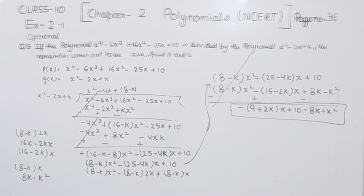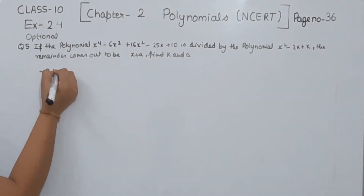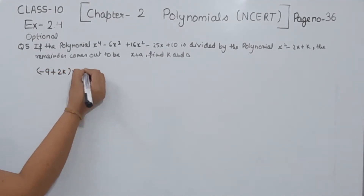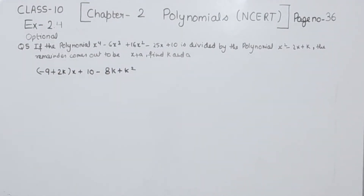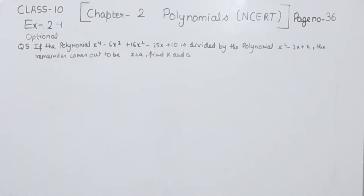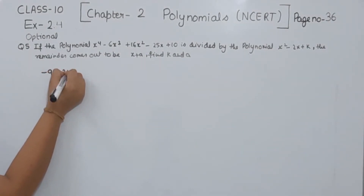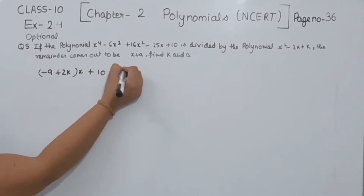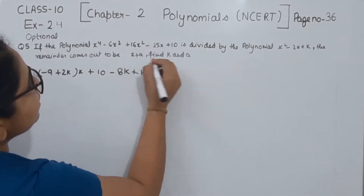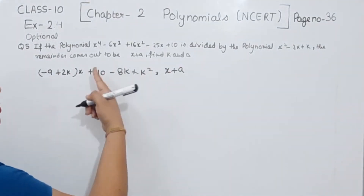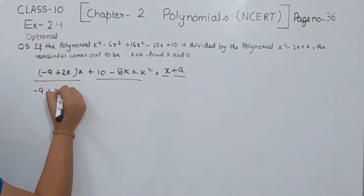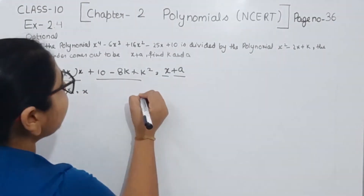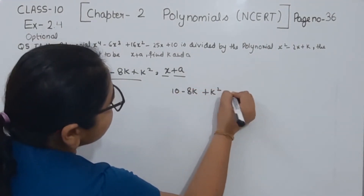Now comparing: the remainder is minus 9 plus 2k times x, plus 10 minus 8k plus k squared, and this is equal to the given remainder x plus a. Comparing the x term: minus 9 plus 2k equals 1. Comparing the constant term: 10 minus 8k plus k squared equals a.